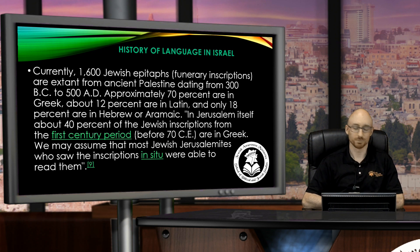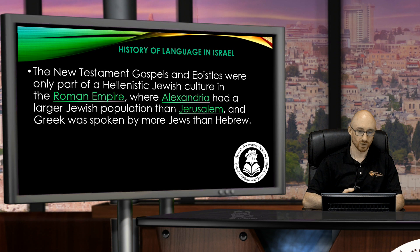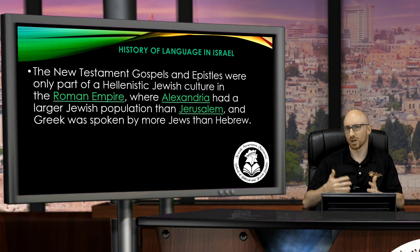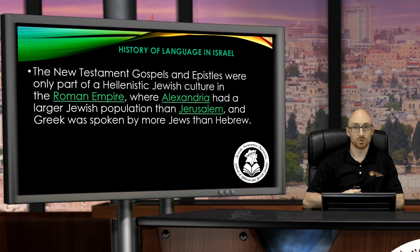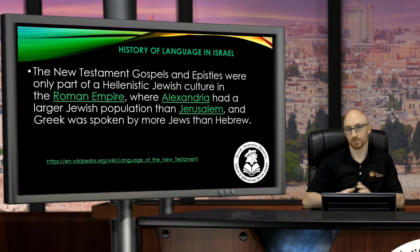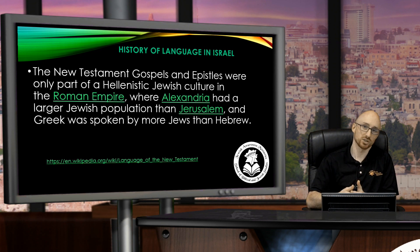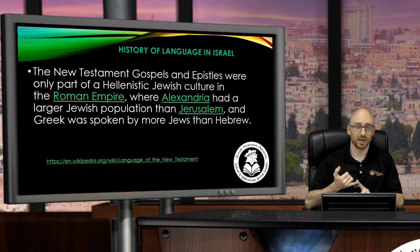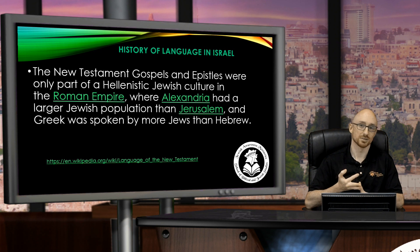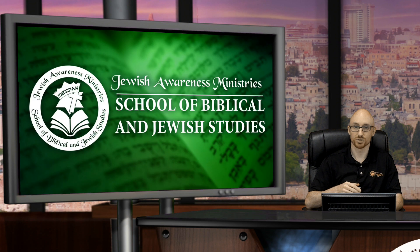Why else would they have been written in Greek? The New Testament Gospels and Epistles were only part of a Hellenistic Jewish culture in the Roman Empire, where Alexandria had a larger Jewish population than Jerusalem, and Greek was spoken by more Jews than Hebrew. These people were not Gentiles — they were Jews, and they spoke with a Jewish context, using Jewish and Hebrew grammatical structures and content that we today sometimes miss in our English translations.